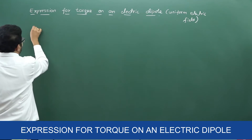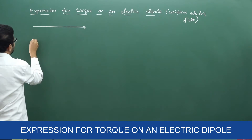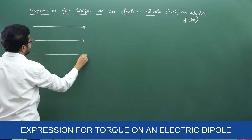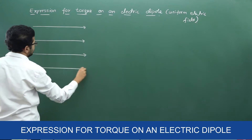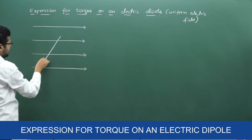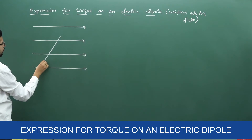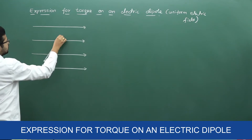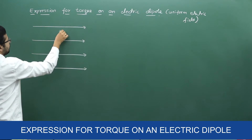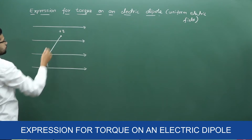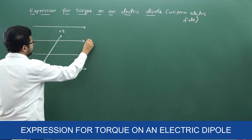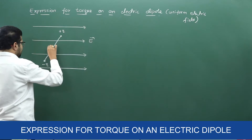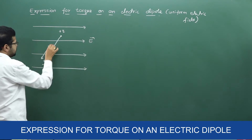Let us consider a uniform electric field with a dipole placed in it. This is the negative charge minus Q, this is the positive charge plus Q. The direction of electric field is from left to right, and the length of the electric dipole is 2A.